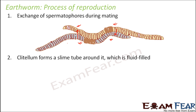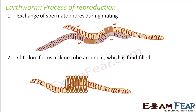After mating, both earthworms have sperm packets stored in their spermathecae. The next step is that the earthworm develops a tube-like structure around the clitellum which is slimy in nature and filled with fluid. This slime tube forms around the clitellum.